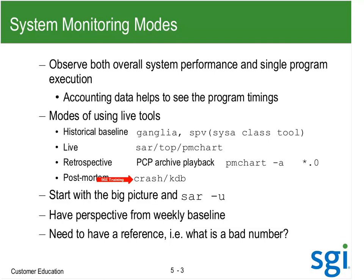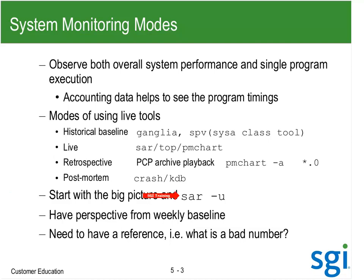We need to spend a little bit of time on baseline and retrospect. When I'm looking at the system, I want to start off with the big picture — basically SAR dash-U to see how busy the CPUs are, how busy is the system time, IO wait, and things of that sort. I need some perspective and a reference. That's what the baseline gives me — it tells me if a number is in range or abnormally out of range.